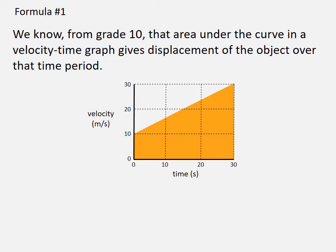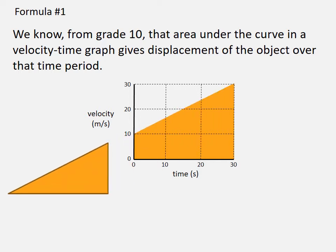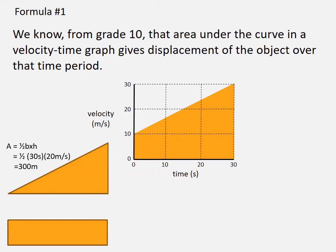The shape is made up of a triangle and a rectangle. The area of the triangle is half base times height: half multiplied by 30 seconds multiplied by 20 meters per second, giving 300 meters. For the rectangle, area is length times height: 30 seconds multiplied by 10 meters per second gives 300 meters. Both shapes are under the graph, so adding the two areas gives a displacement of 600 meters over the 30-second period.